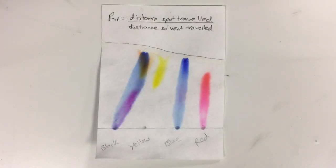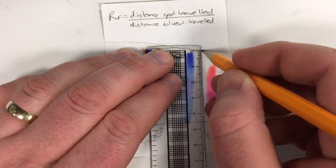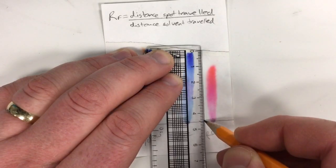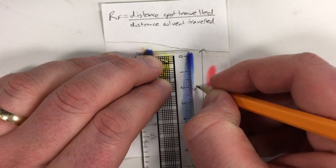Our chromatogram is now ready for analysis. To analyse this we need to determine the RF values of the spots. To calculate the RF value we use the equation distance of the spot travelled divided by the distance of the solvent travelled.